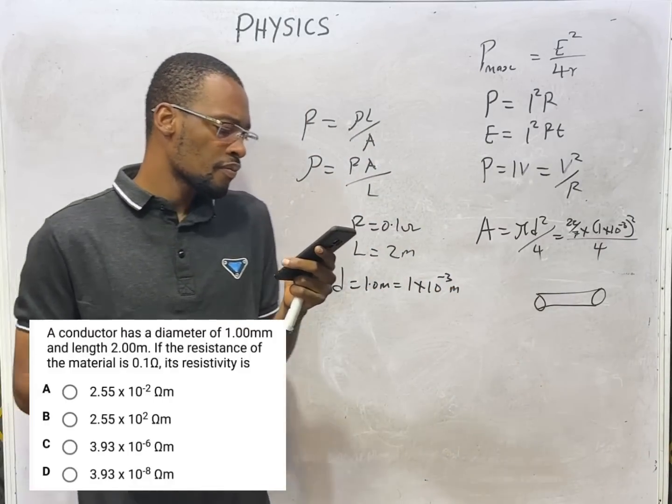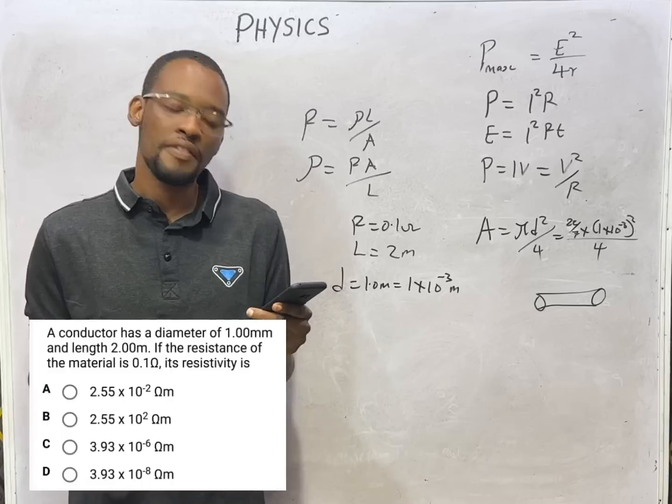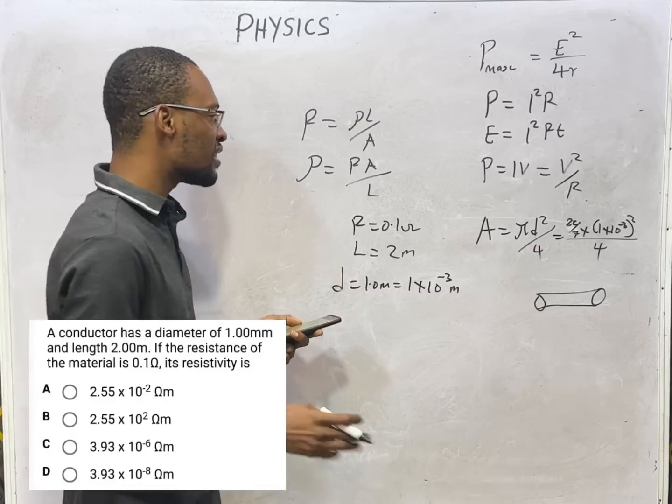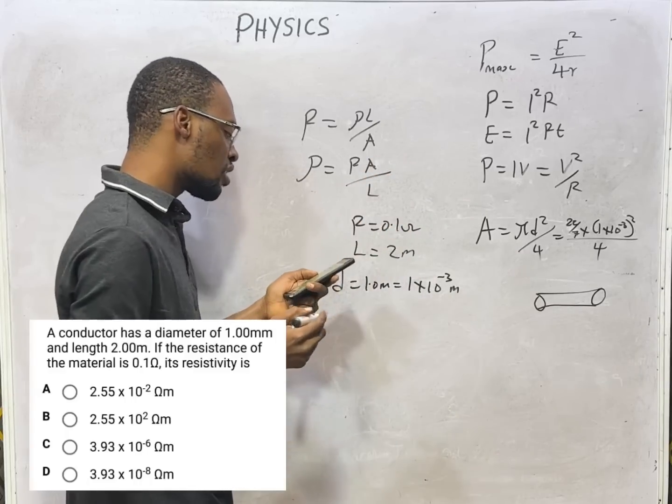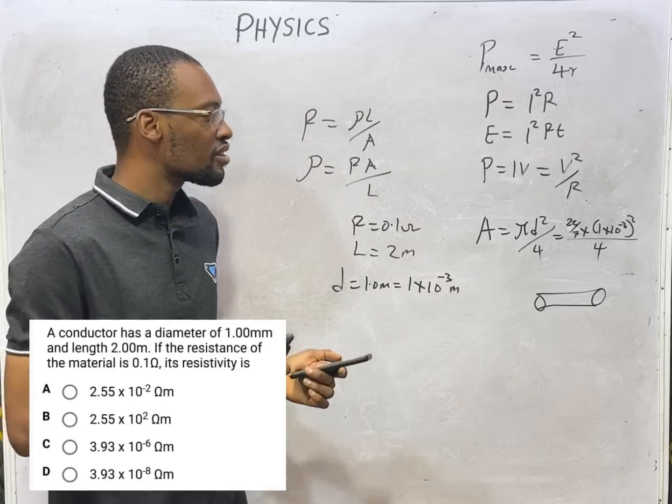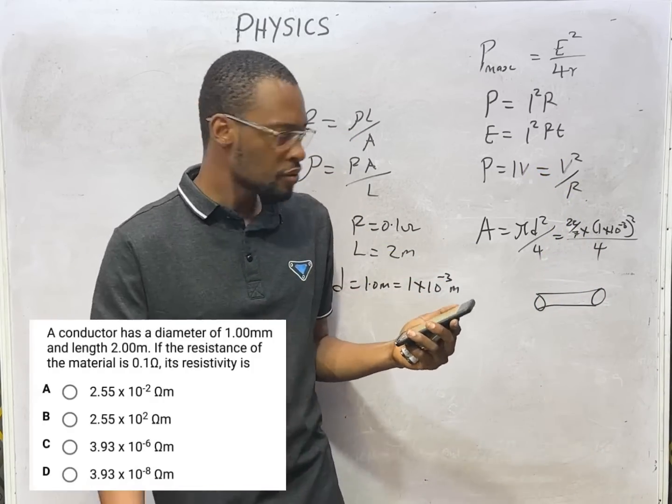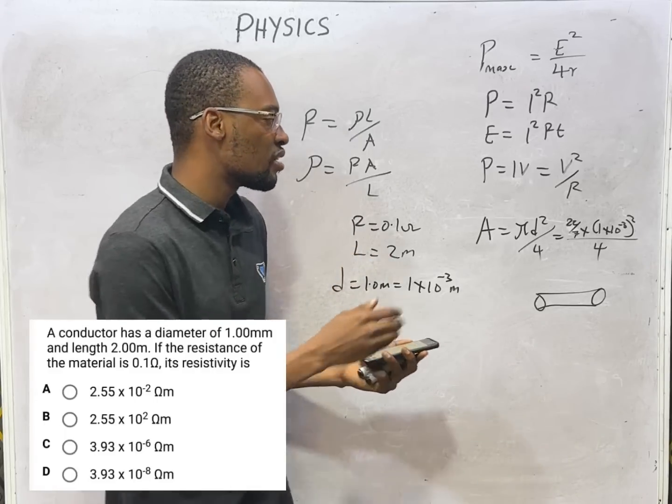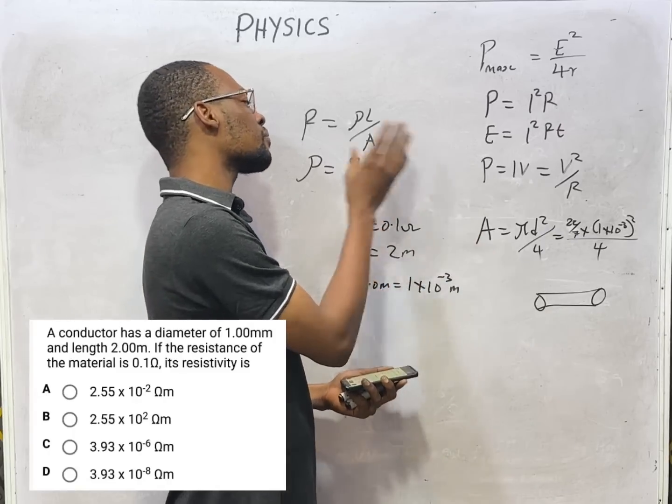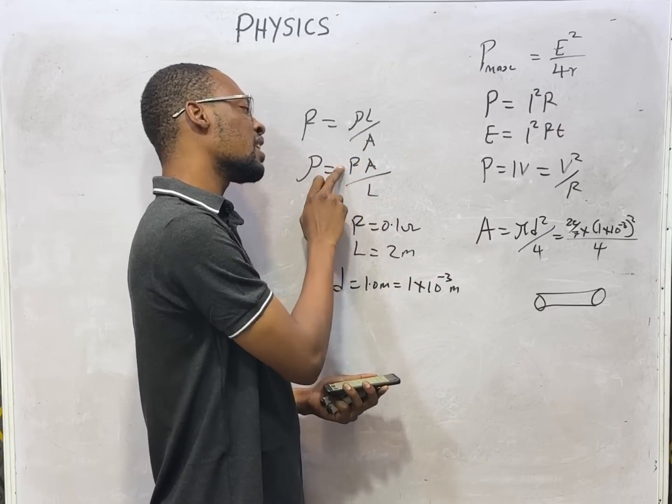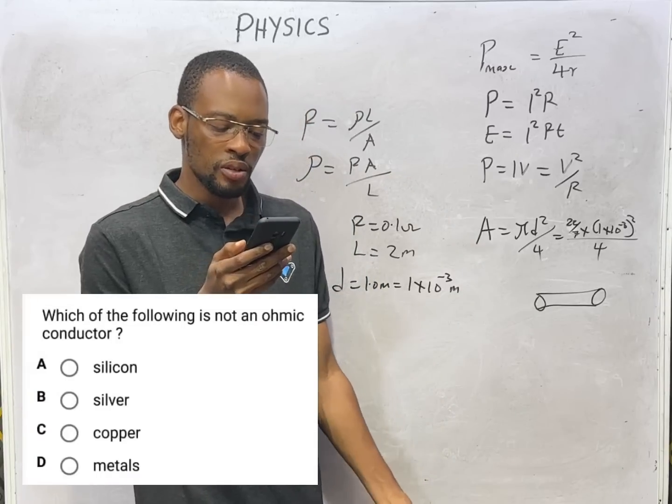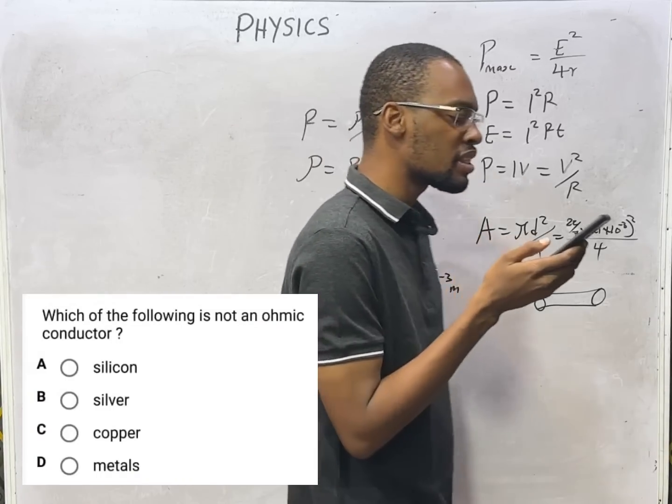If you solve that correctly your area should be around 7.855×10⁻⁷. If you substitute the resistance times the area you've got divided by the length, you are going to get 3.93×10⁻⁸ ohm meter. So option D is your correct option. For diameter, area is πd²/4. You substitute the value of area multiplied by the resistance over length.